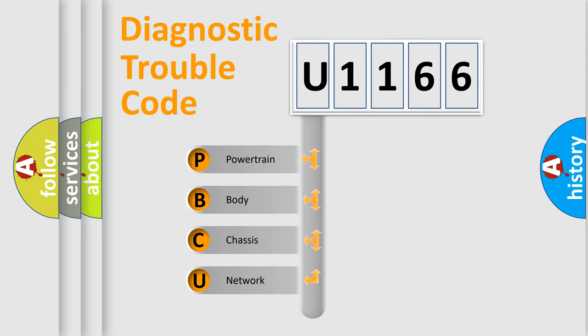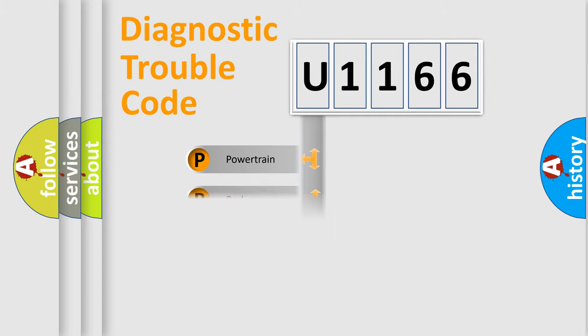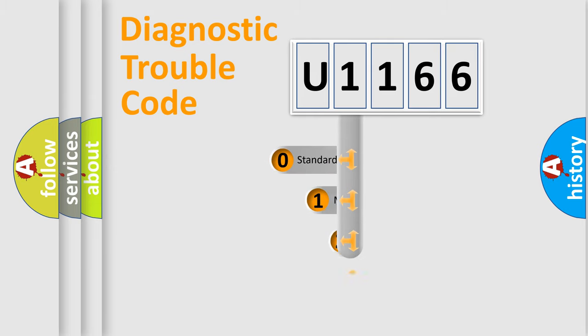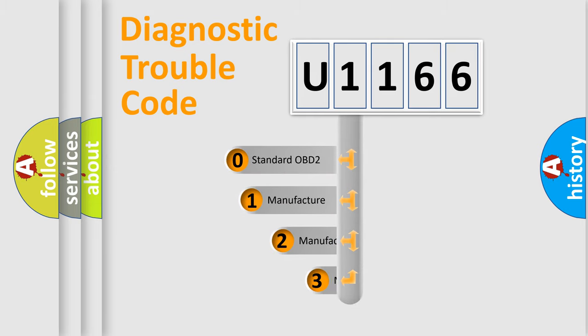We divide the electric system of the automobile into four basic units: Powertrain, Body, Chassis, and Network. This distribution is defined in the first character of the code.